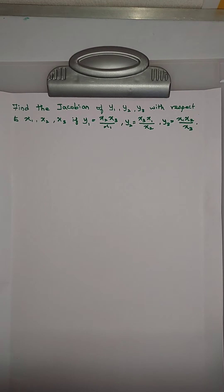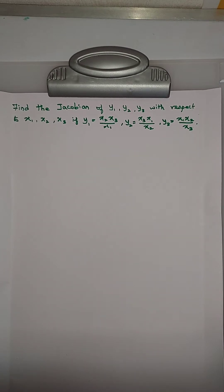The question is to find the Jacobian of y1, y2, y3 with respect to x1, x2, x3, given that y1 = x2·x3/x1, y2 = x3·x1/x2, and y3 = x1·x2/x3.